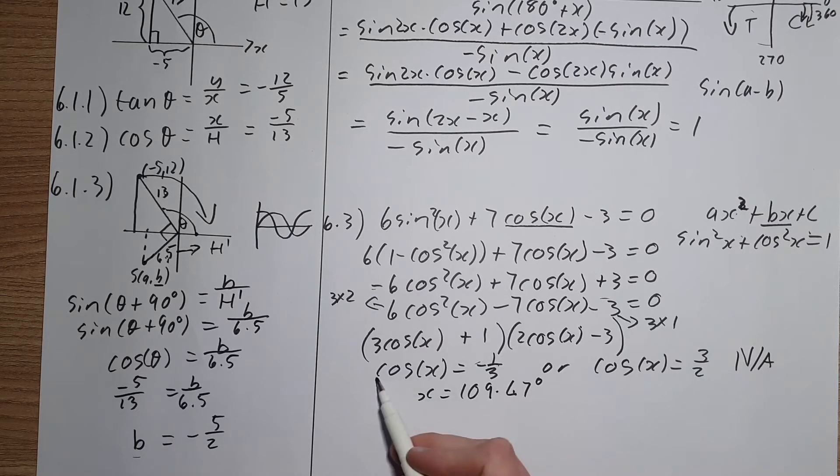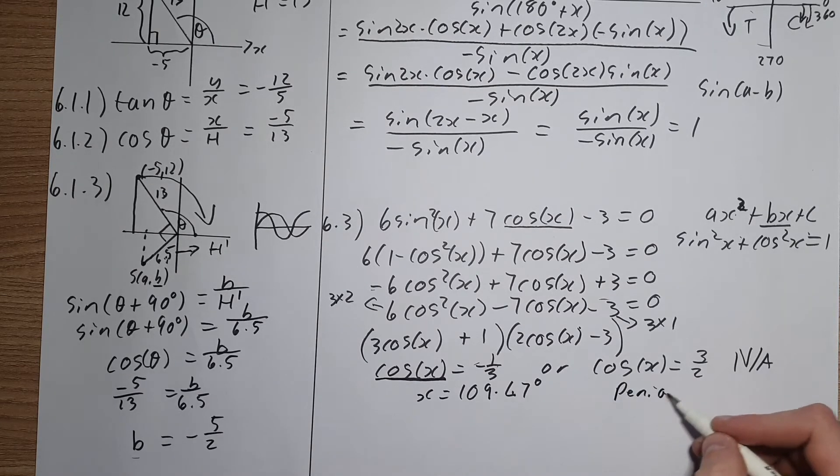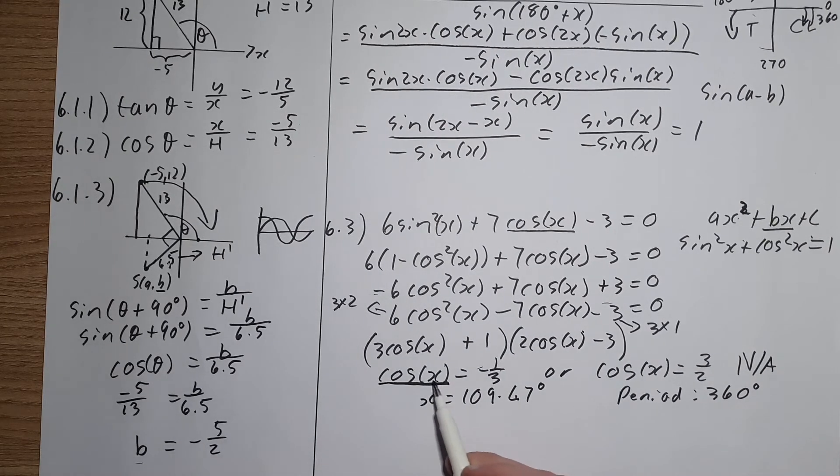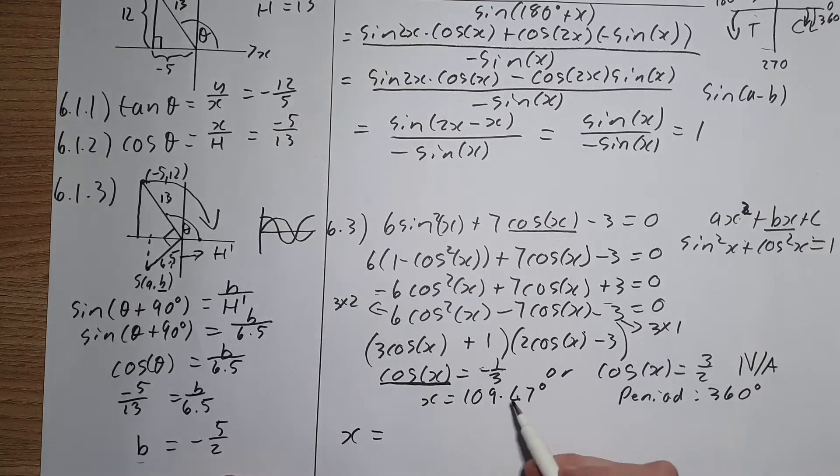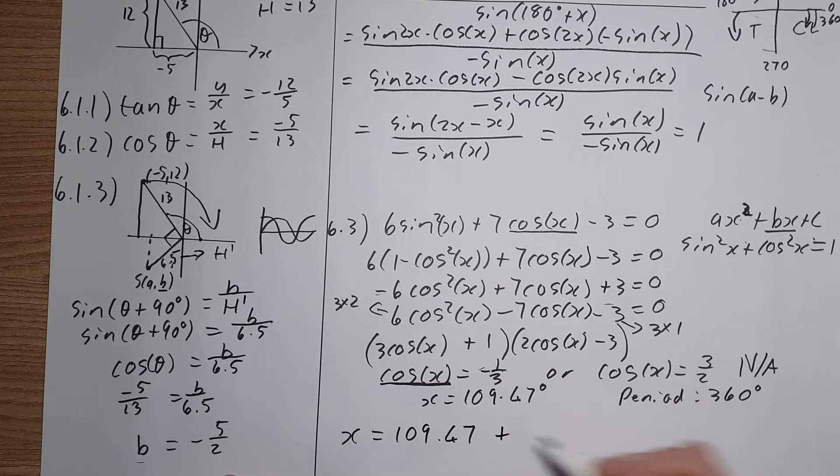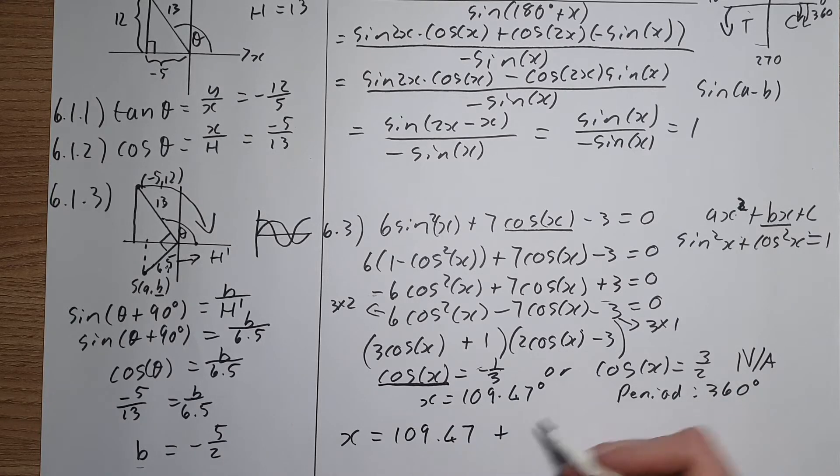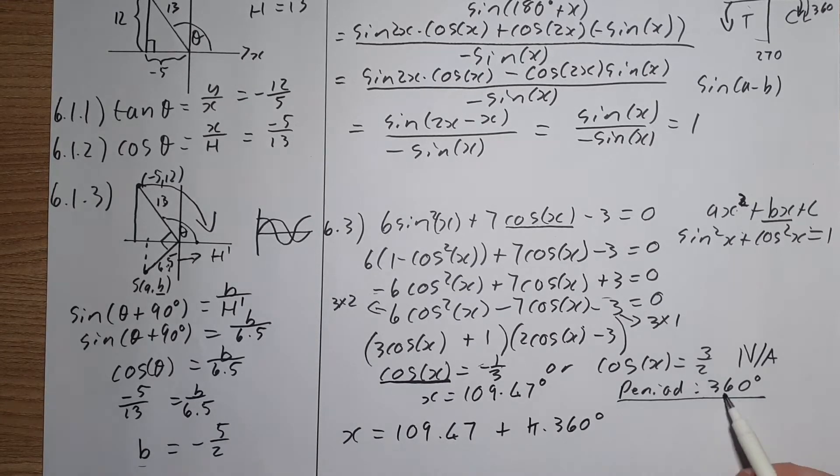But now we need the general solution. Now please note that we're dealing with a cos function over here, and the period for a cos function is 360 degrees. Now note as well that this cos function hasn't had anything happen to its period, the function hasn't shifted or anything, it's just a plain cos function, which means my general solution is going to be the reference point that we've just calculated, plus, then you can pick any variable you want, n, k, p, whatever makes you happy, I normally use k, times 360 degrees.